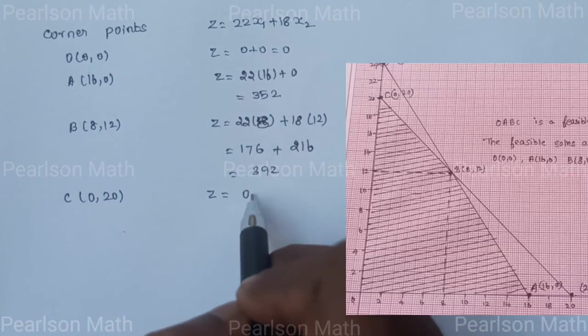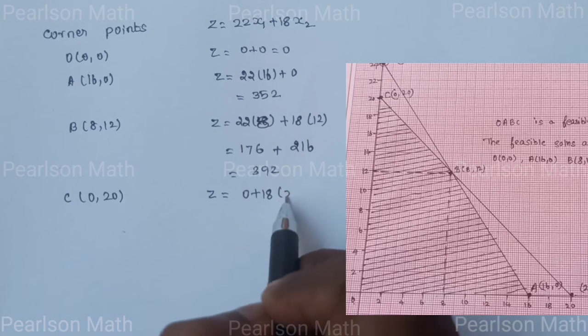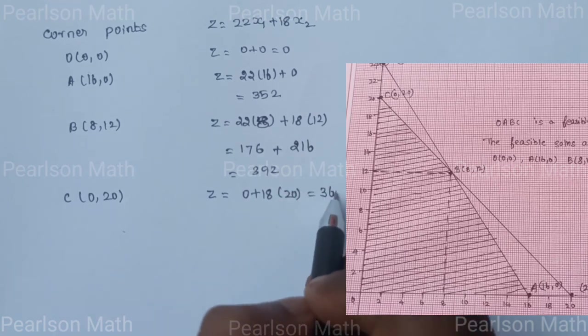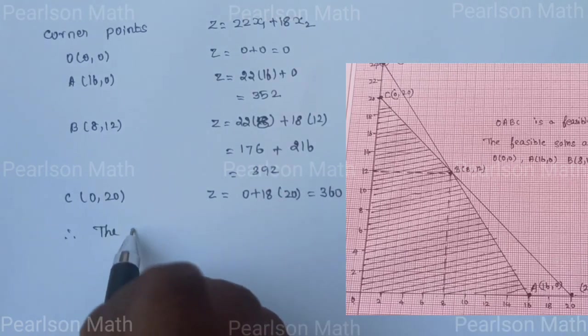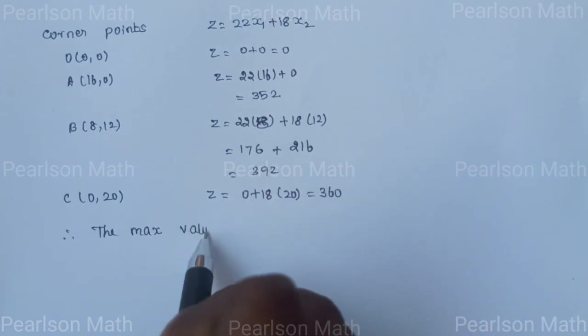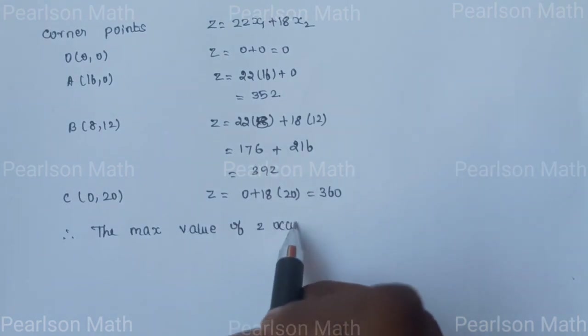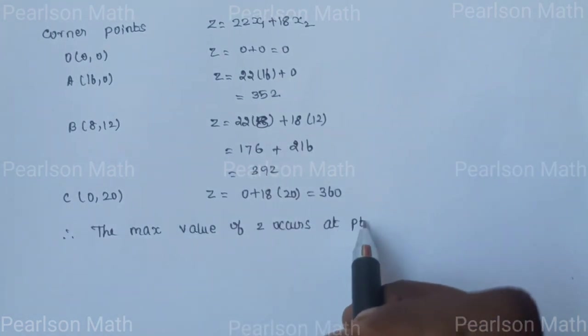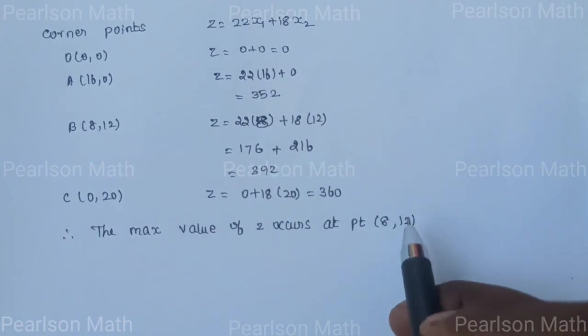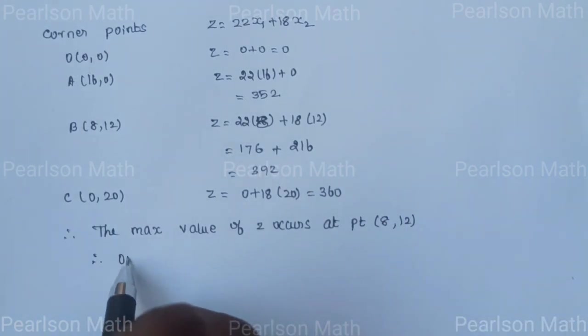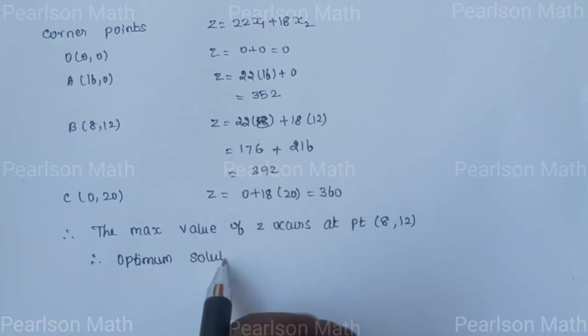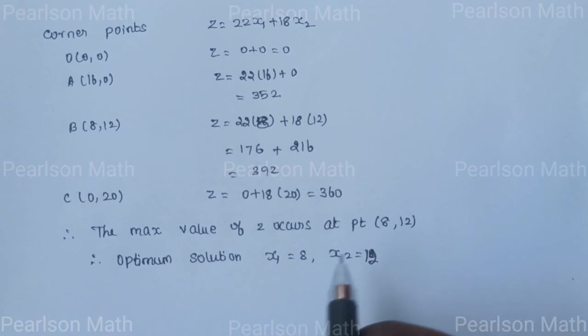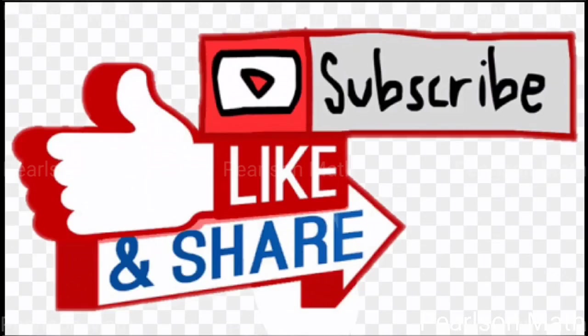The maximum value is 392 at point (8, 12). Therefore, the maximum value of Z occurs at point (8, 12), which is the optimum solution. Optimum solution: x₁ equals 8, x₂ equals 12, therefore Z maximum equals 392.